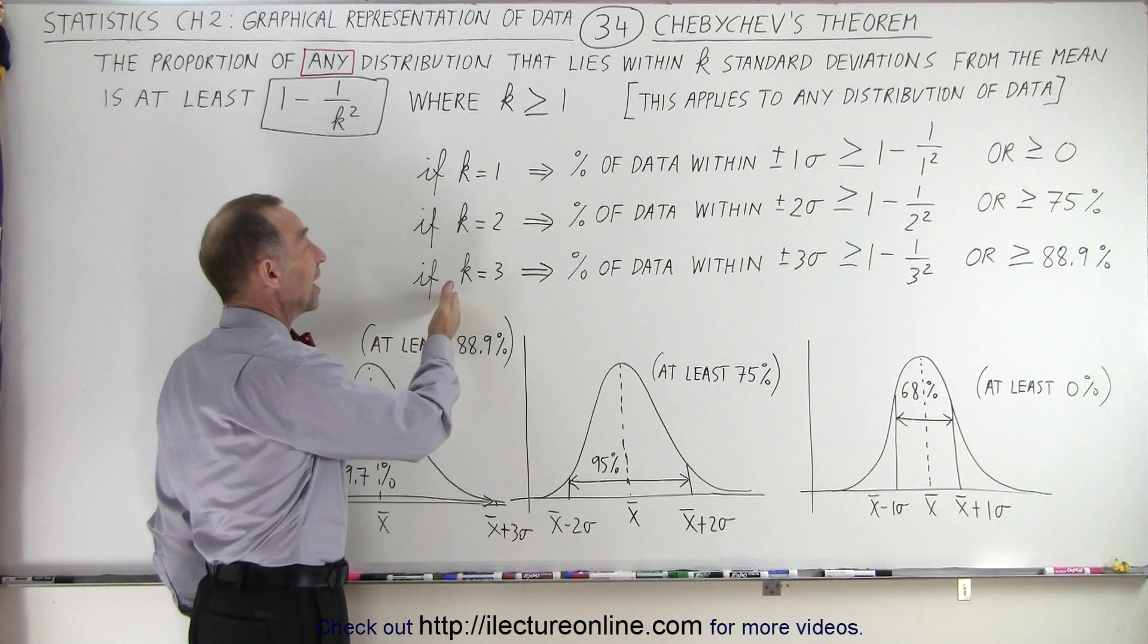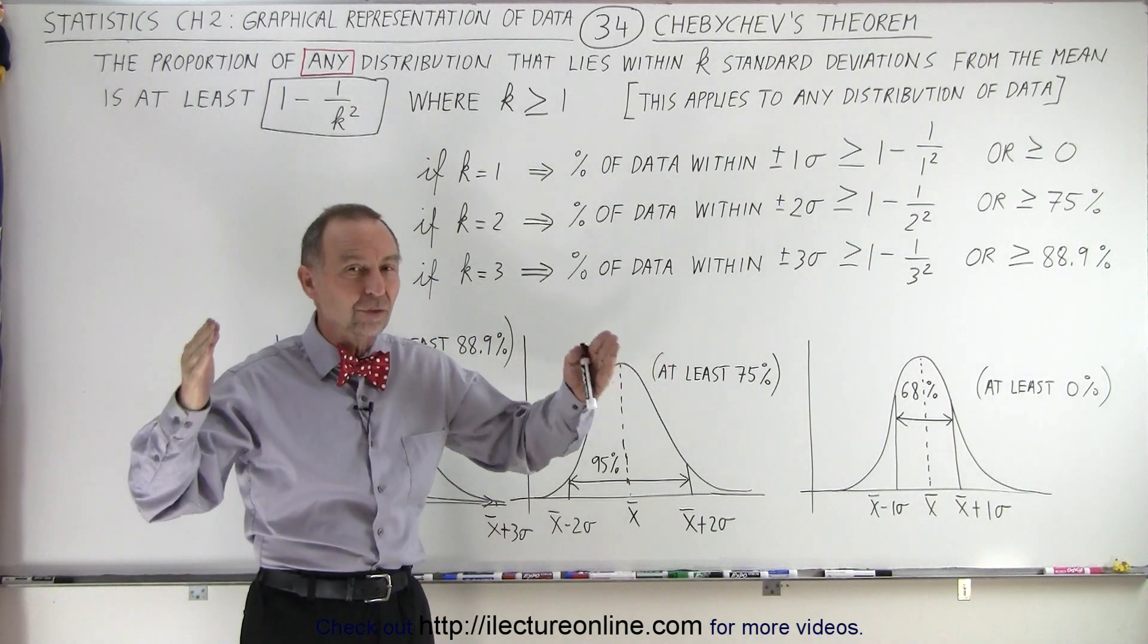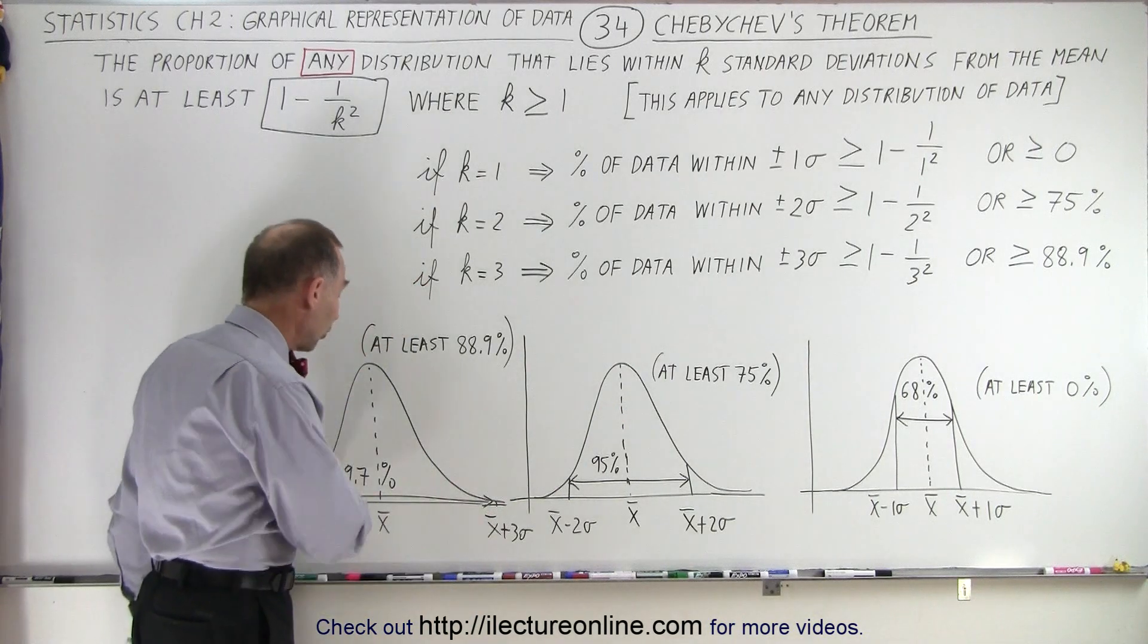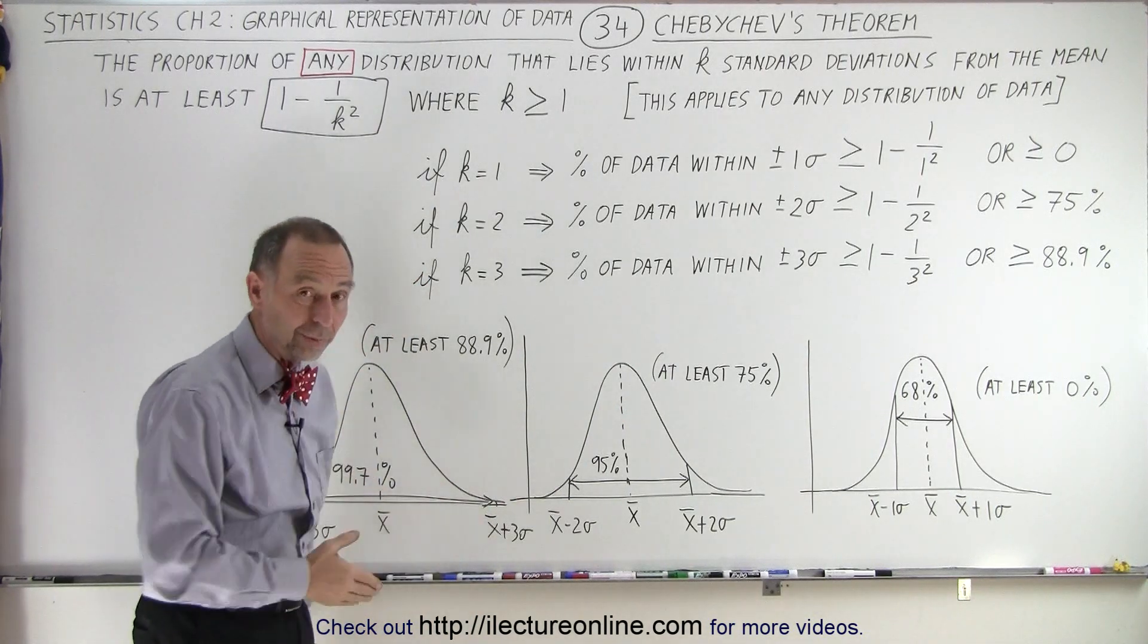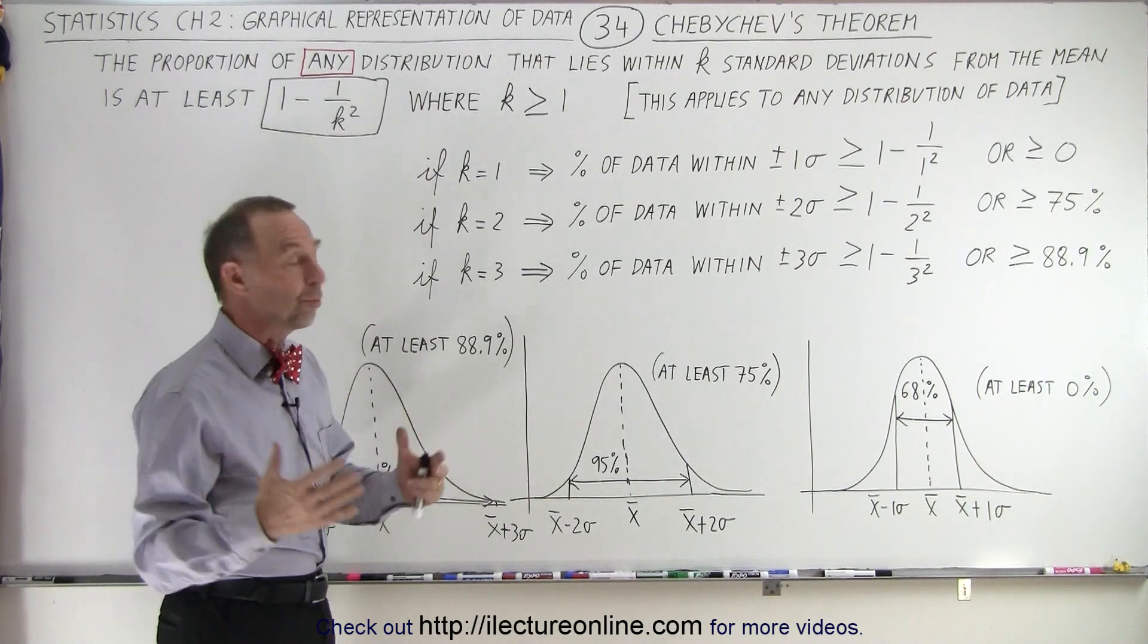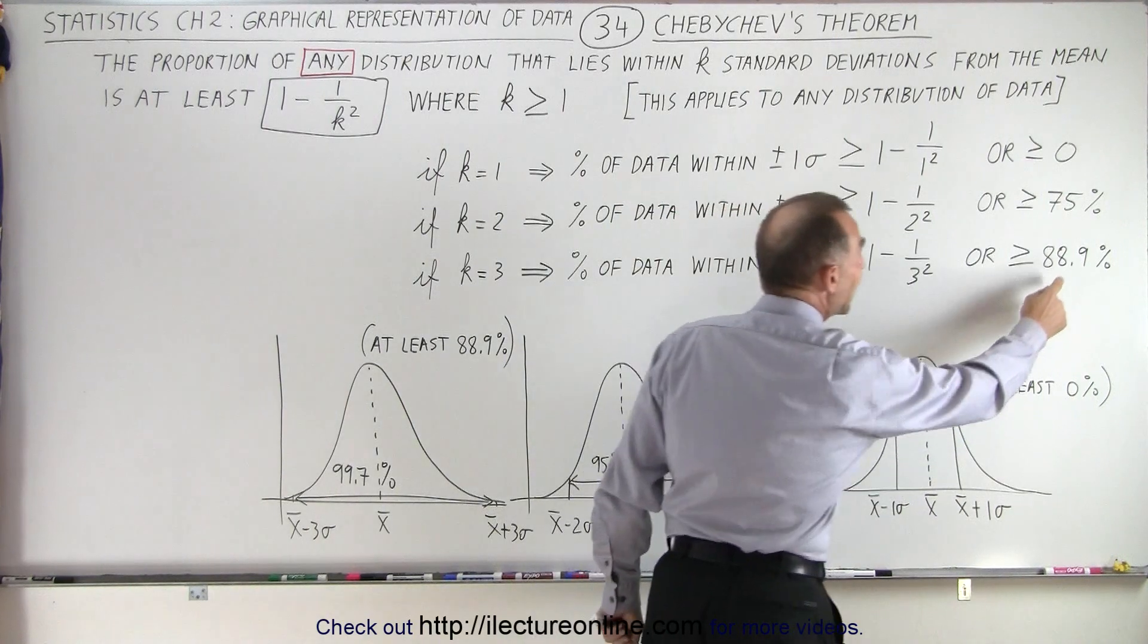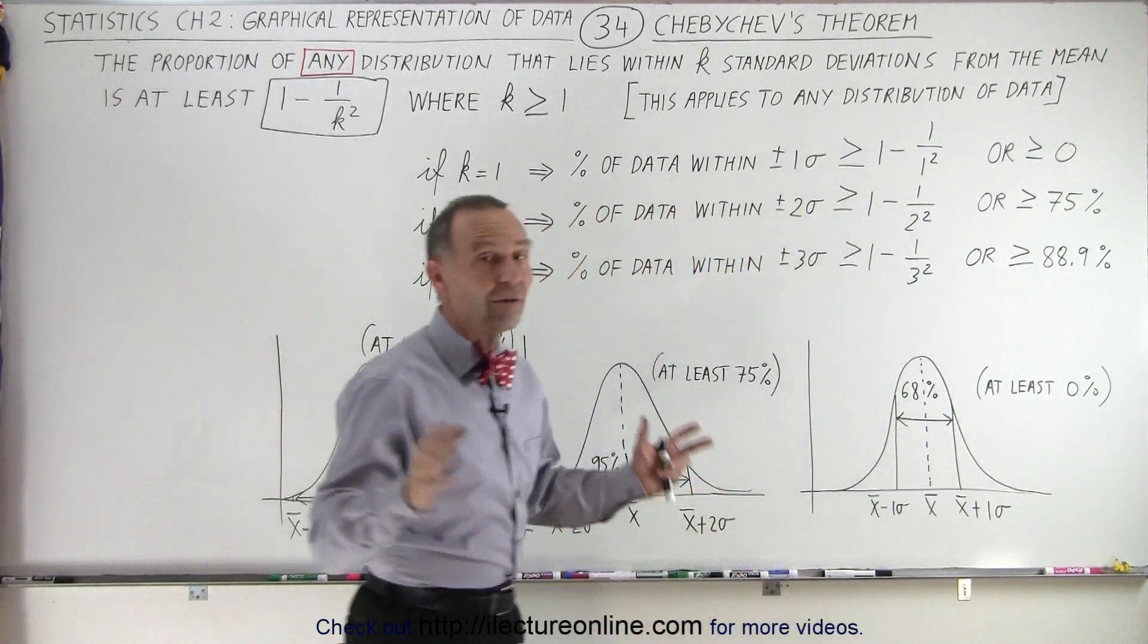Lastly, if k equals three, so we're looking for all the data falling between plus or minus three sigma, we know that for a normal distribution it's almost 100%, 99.7%, but for any other distribution, Chebyshev said that it's at least 88.9% of all the data.